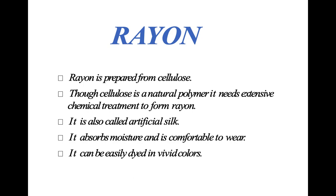First is rayon. Rayon is prepared from cellulose, which is obtained from wood pulp. Though cellulose is a natural polymer, it needs extensive chemical treatment to form rayon. It is also called artificial silk because it shows the properties of silk — it absorbs moisture, is comfortable to wear, and can be easily dyed in vivid colors.